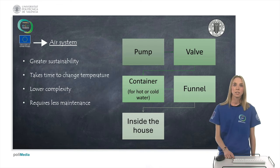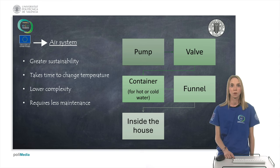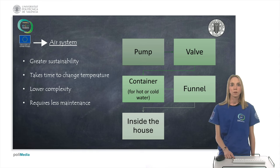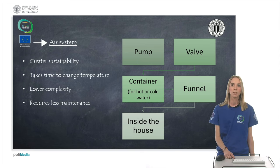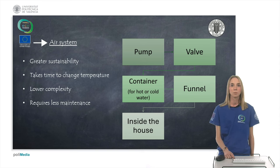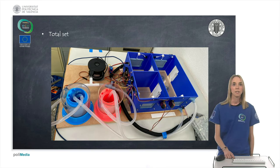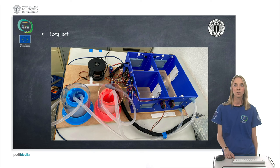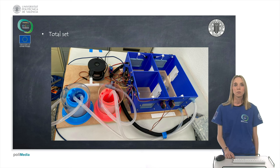The air conditioning system consists of two tubes, also simulating pipes like in the underfloor heating, through which air is passed. The system offers greater sustainability compared to other systems that use heat transfer fluids, since no chemicals are used. The system is made up of two tubes, a pump, two valves, two containers, and two funnels. The two tubes come from a pump, and depending on whether the interior of the house needs to be heated or cooled, the pump will turn on and air will flow through the tubes.